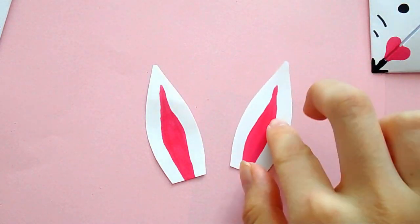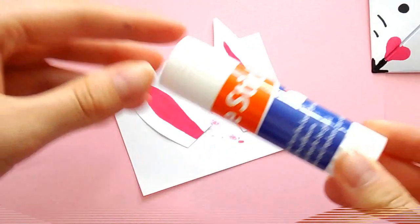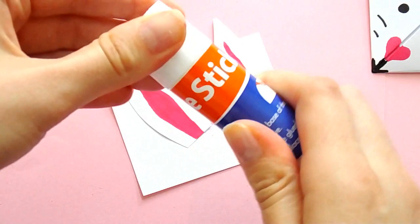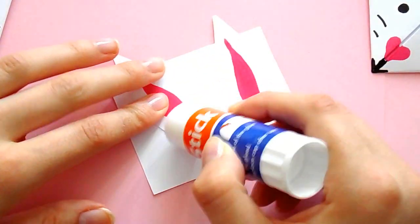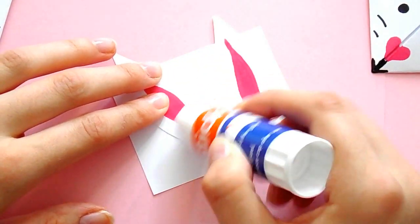And there we have our ears. Now all we need to do is just take a glue stick and apply this to the base of the ears. Don't want it to go very far up because we want most of the ears to be showing.